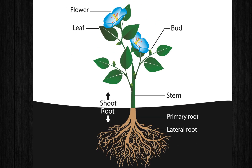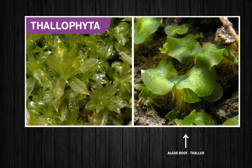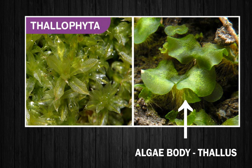A well developed plant has stem, leaf, and roots. But in case of algae, there is no root, stem, or leaf-like structure, and thus they are classified as Thallophyta. In fact, the algae body is known as thallus.